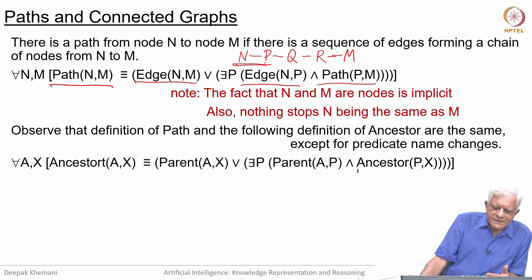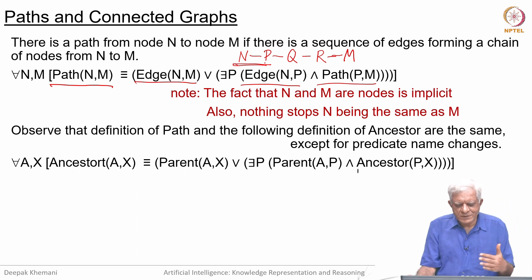You would have observed that this definition of path is almost the same as the definition of an ancestor that we had defined. If you look at these two definitions component by component you will see that they are identical except for name changes.